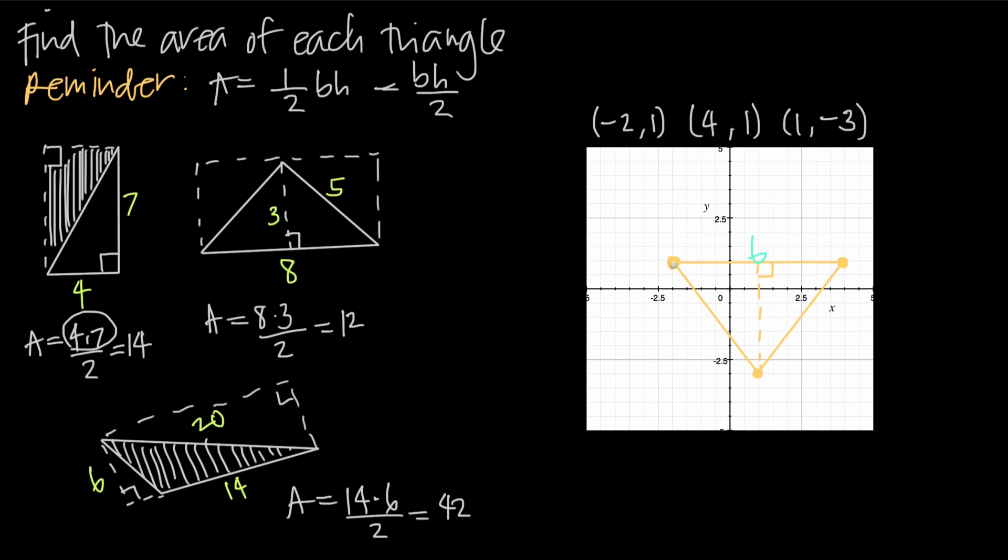And then what about the height? I can see that the top of the triangle is here at positive 1. The bottom of the triangle is here at negative 3. So I have 1 unit above the x-axis, 3 units below the x-axis. So 1 plus 3 is going to give me 4. So my height will then be 4.